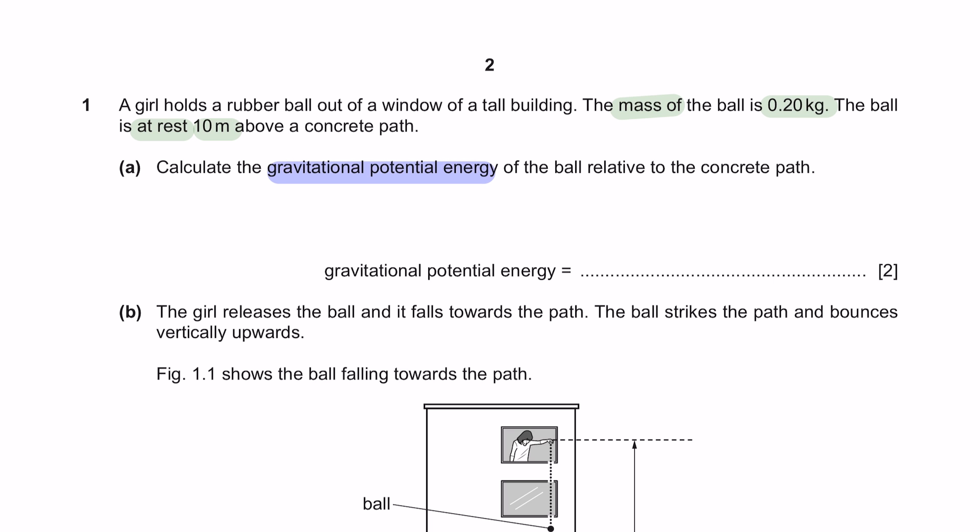When you are asked to calculate any type of question, the most important thing that you should know is the formula. For this question, it's already mentioned here that you need to calculate the GPE. And the formula for GPE is mass times gravity times its height. All we have to do is plug in the values that is given in the question. A value of 9.8 and the height here is 10 meters. This will give you a value of 19.6 joule. Remember to always leave your answers in two significant figures. Therefore, your final answer here is 20 and the units are joule.